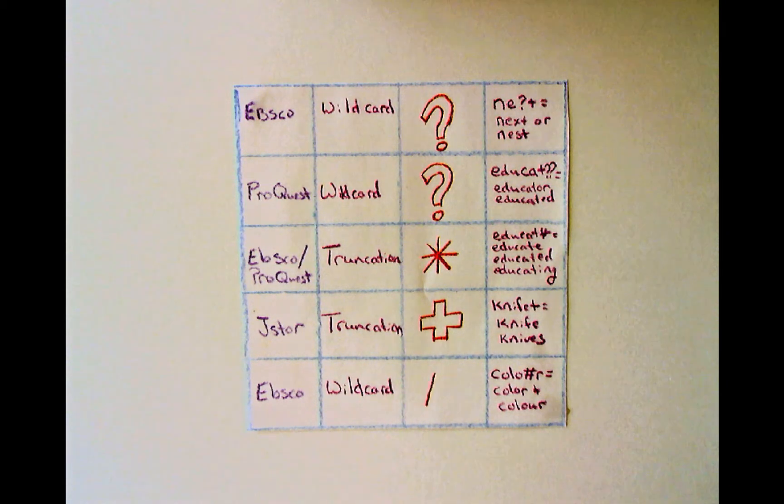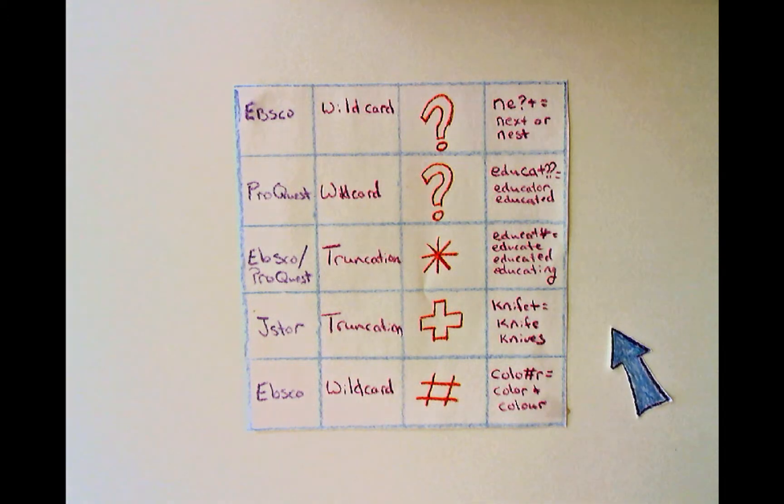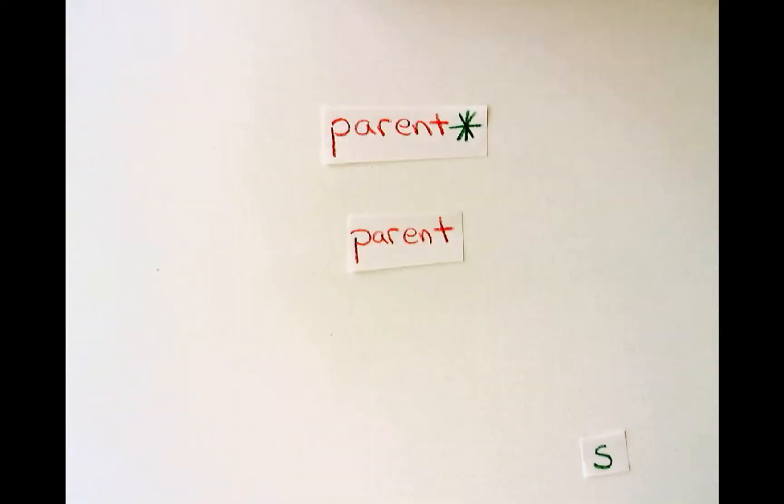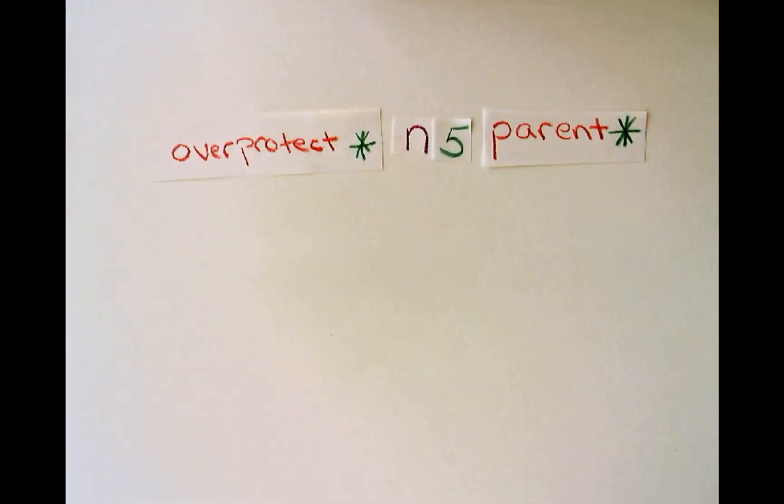The simplest type of truncation is unlimited truncation. When searching EBSCOhost, stem the search term where you want the unlimited truncation to begin and append an asterisk onto the stem to get different endings. So search for parent asterisk retrieves parent, parents, parenting, parented, parental.